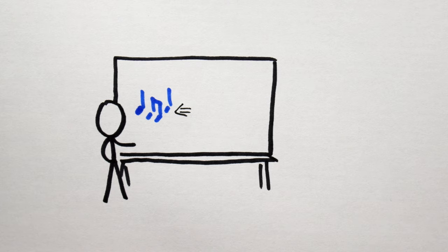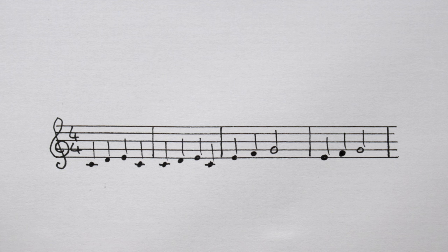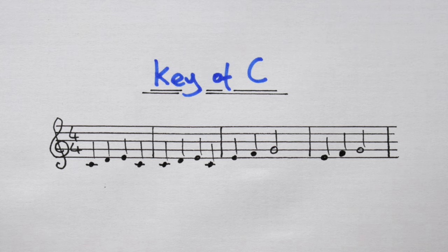To explain, every piece of music uses the notes of a scale. This piece uses notes found in the C major scale. So we say that the piece is in the key of C major.